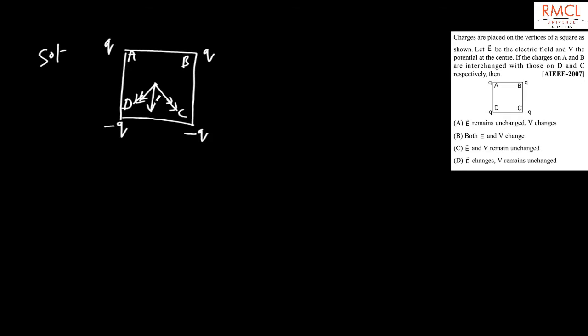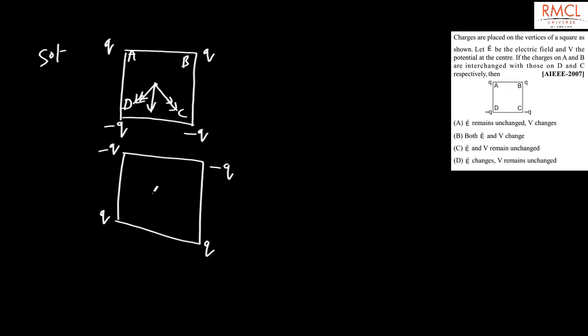After interchanging the charges: vertex D now has -Q and vertex A has Q; vertex C has -Q and vertex B has Q. The electric field due to Q at D, Q at C, and -Q at the other vertices now results in a net electric field pointing in the upward direction. So the electric field has changed after interchanging the charges at vertices A, B, C, and D.